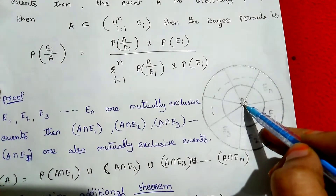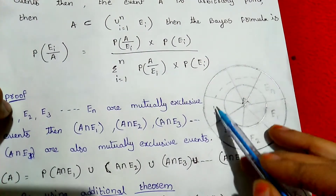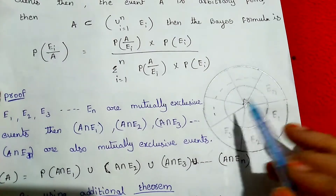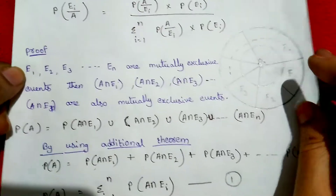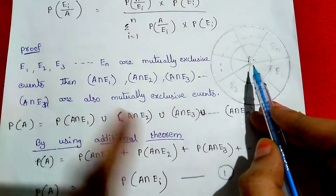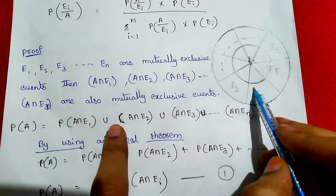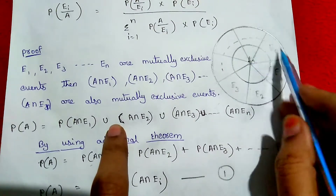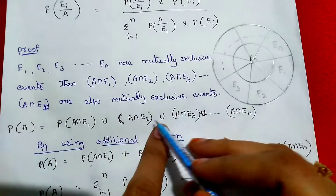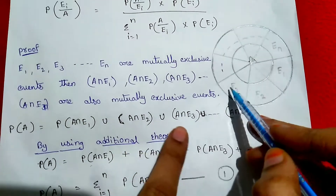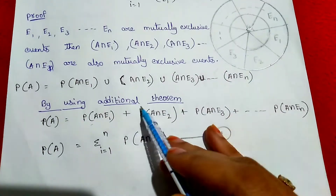A is the arbitrary point. Then A intersection E1, A intersection E2, A intersection E3, and so on A intersection EN are also mutually exclusive events. Then the next note is: probability of A equals probability of A intersection E1 union A intersection E2 union A intersection E3 and so on up to A intersection EN.